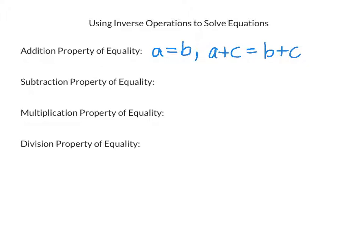The subtraction property of equality says if A equals B, then subtracting the same quantity from both sides of the equation will still keep the equation balanced or equal.